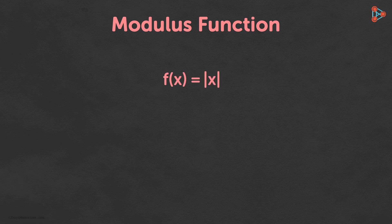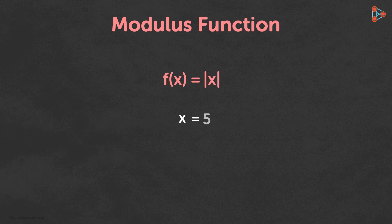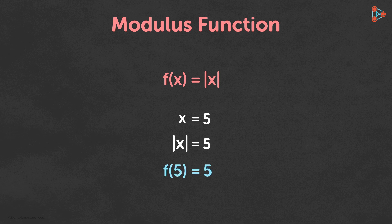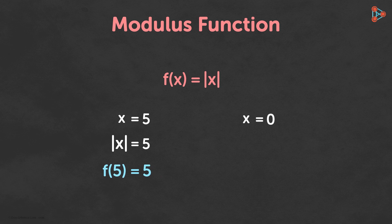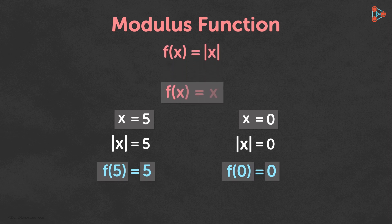The modulus function is written as f(x) = |x|. The input for this function is any real value of x, and the output will be the magnitude of x. For example, when x = 5, the modulus of x is also equal to 5. Similarly, when x = 0, the modulus of x is 0. In both cases, f(x) = x. So we say that f(x) = x when x is greater than or equal to 0.